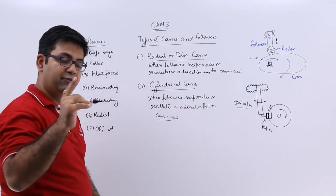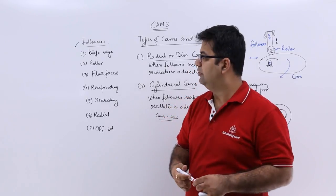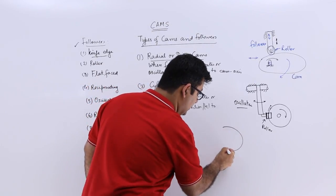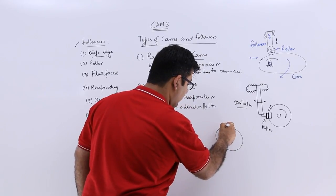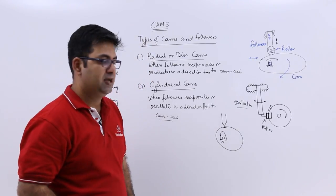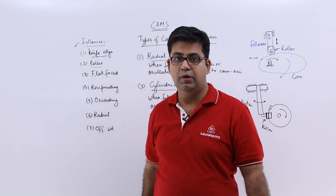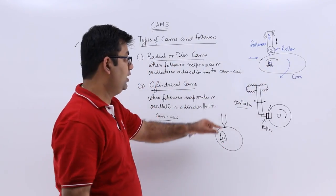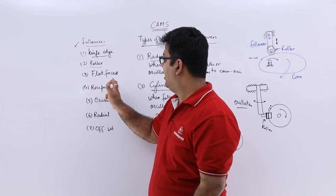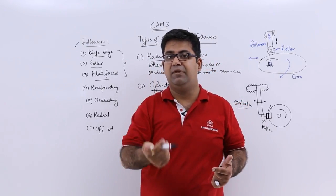Now let's talk about the types of followers. Followers can be classified first by the type of contact they have with the cam. The very first is the knife edge follower — the follower has a very pointed knife edge with which it is in contact with the cam. Then we have the roller follower, where a roller makes the contact between the follower and the cam possible. Then we have the flat faced follower. So these three types are based on the type of contact between the cam and the follower.